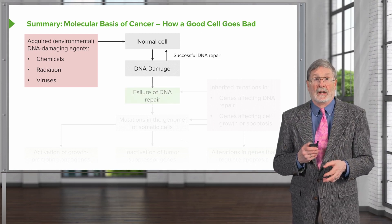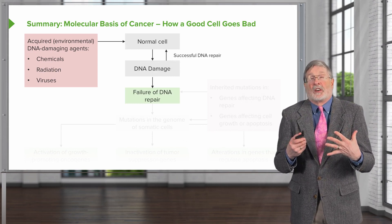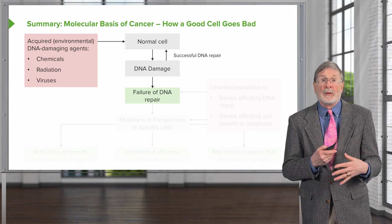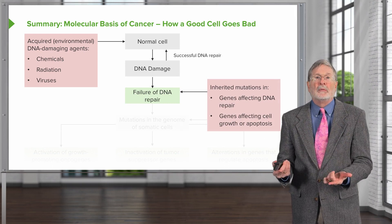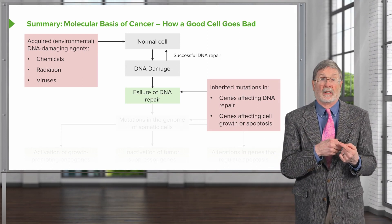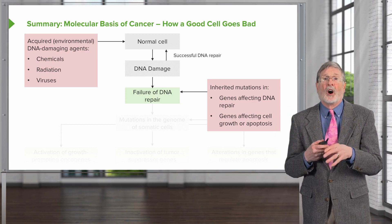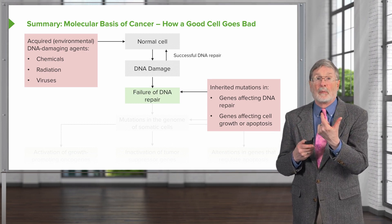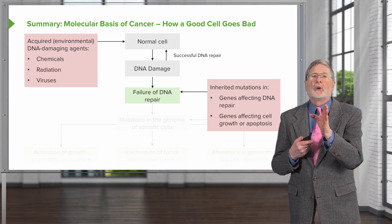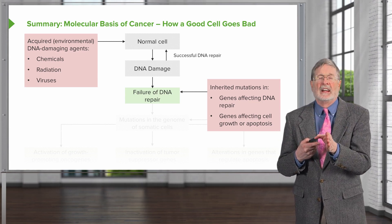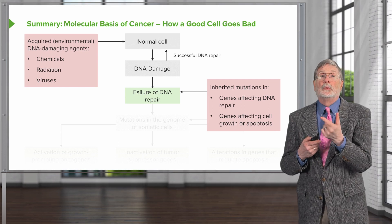Sometimes, though, you can have failure of that DNA repair mechanism. You may have so much damage that the cell can't possibly repair it all. But you can also have defects that occur in the setting of inherited mutations in the ability to do DNA repair. There are certain syndromes responsible for failure of DNA repair. The BRCA1 gene — if you inherit that particular gene, your ability to repair DNA is diminished, and that's why those patients have a higher risk of breast and gynecologic malignancies.